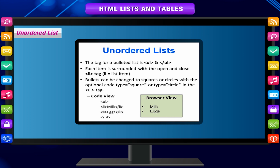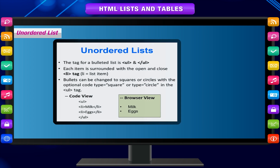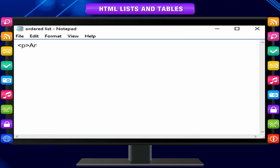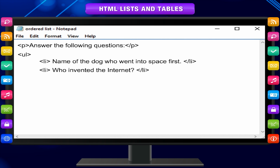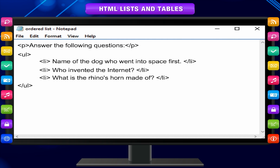An unordered list is bulleted and indicated by the container tag UL. For example: a p tag followed by UL, with LI items such as 'Name of the dog who went into space first', 'Who invented the internet', and 'What is the rhino's horn made of', closed with slash LI and slash UL tags — this will display in the browser as a bulleted unordered list.